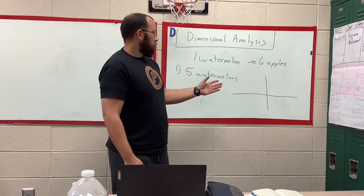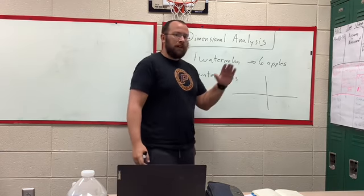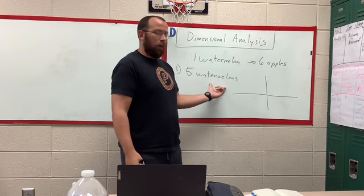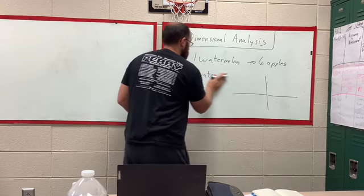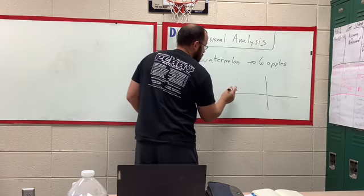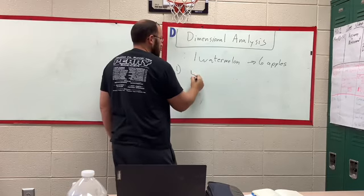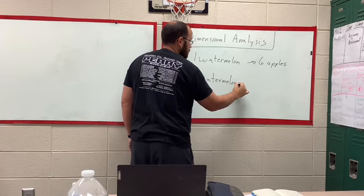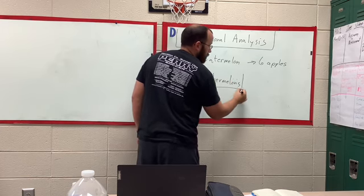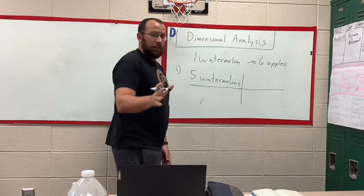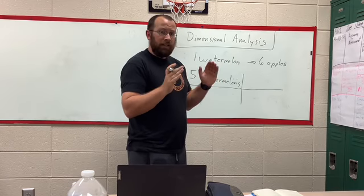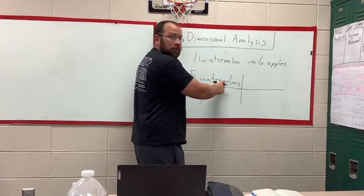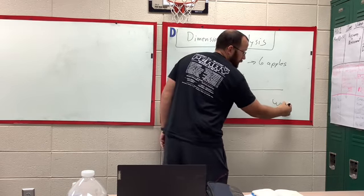You have to ask yourself, what am I starting with? I start and I want five watermelons. So, I'm just going to erase all of this. So, five watermelons. How many apples do I owe you? This is the trick to this whole thing. Knowing that the units go diagonal. So, if this is watermelons, and you're going to go diagonal, this is going to be watermelons.